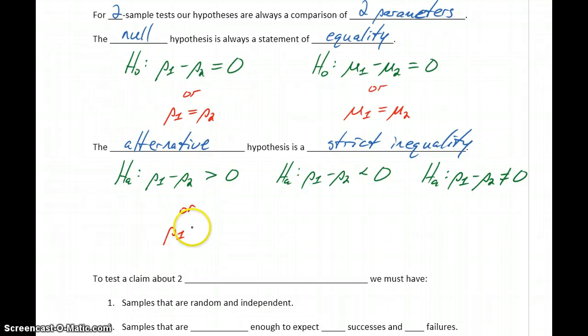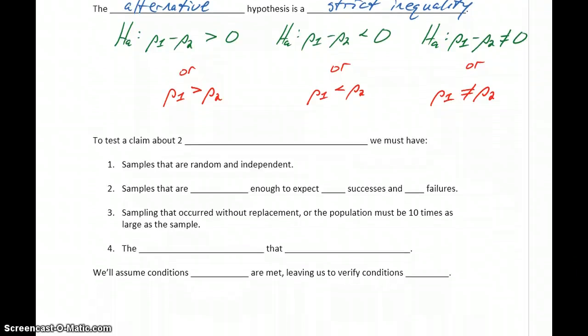if we end up rejecting the null hypothesis, is that the first population proportion is larger than the second, or that the first population proportion is smaller than the second, or that the two population proportions are just different from each other. So we're not concerned with which one's larger, which one's smaller. In that case, our alternative is just that they're somehow different from each other.